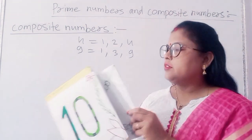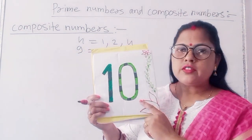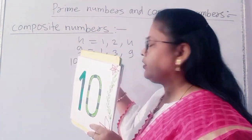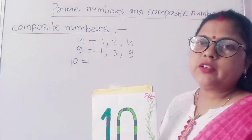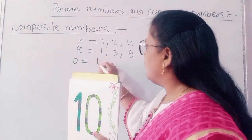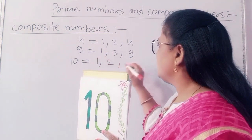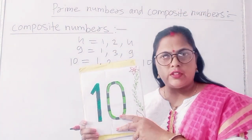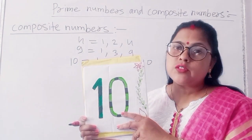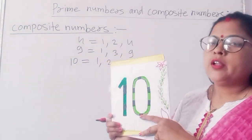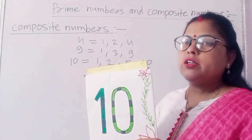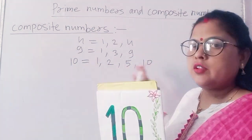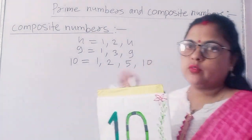Next I have taken 10. First I will write the number 10 and find its factors. The factors of 10 are 1, 2, 5, and 10. So 10 is also a composite number because it has more than 2 factors — it has 4 factors: 1, 2, 5, and 10.